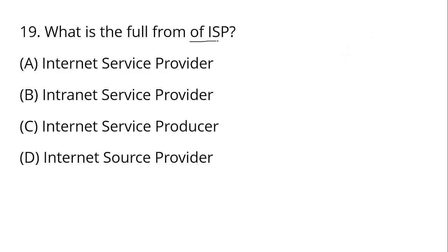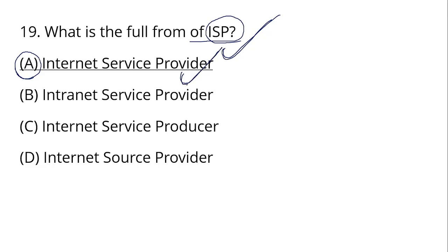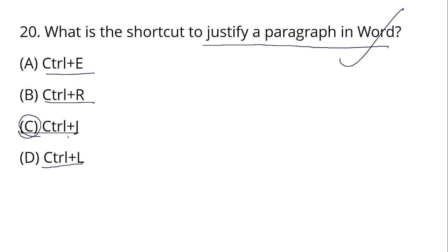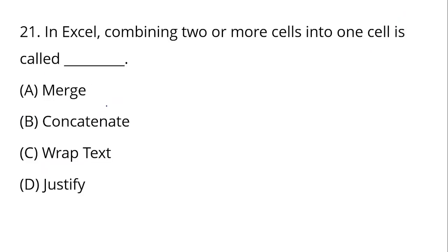What is the full form of ISP? ISP stands for Internet Service Provider. Without an ISP you cannot access the internet — this works through a proxy. What is the shortcut to justify a paragraph in Word? The shortcut is Ctrl+J, which applies justify alignment. Other alignments include Ctrl+R for right, Ctrl+L for left, and Ctrl+E for center.